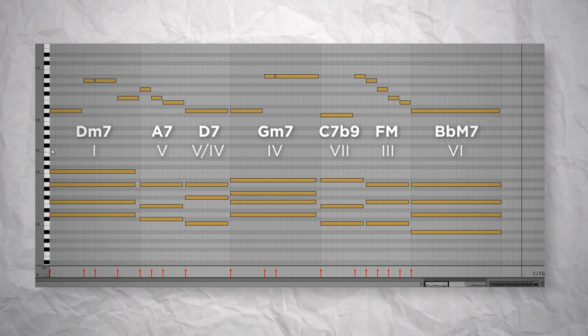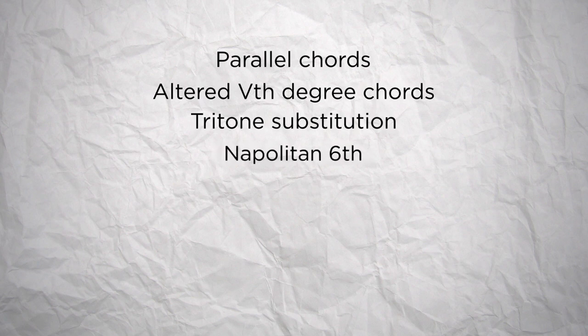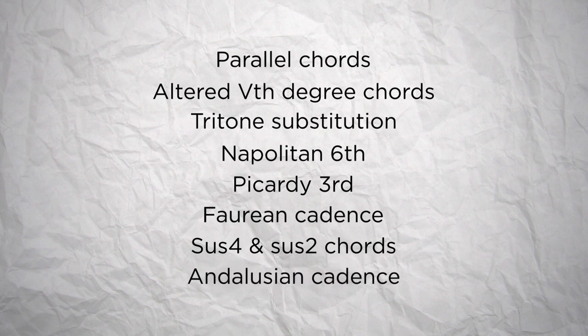So we saw here an example of a non-diatonic chord with the secondary dominant. But you can also harmonize your melodies using all the chords, substitutions, borrowings and alterations we saw in the series. Just to name them, we saw the parallel chords, the altered 5th degree chords, the tritone substitution, the Neapolitan 6th, the Picardy 3rd, the Phrygian cadence, the sus4 and sus2 chords or even the Andalusian cadence.